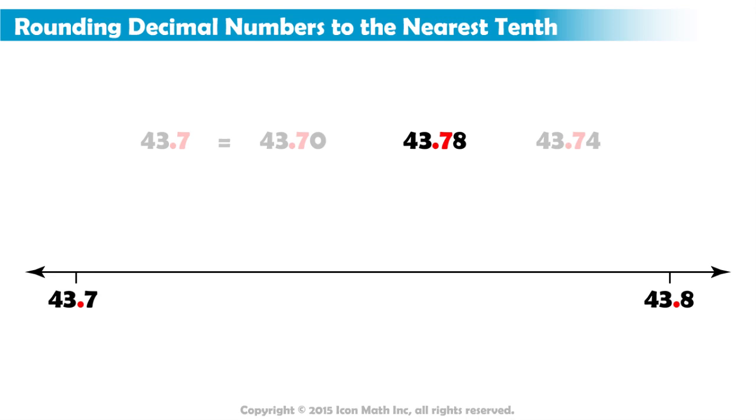Because we want to find the number with one decimal place that is closest to 43 and 78 hundredths. And the two closest numbers with one decimal place are these, 43 and 7 tenths, and the number one tenth more, which is 43 and 8 tenths. So 43 and 78 hundredths will be somewhere in between.